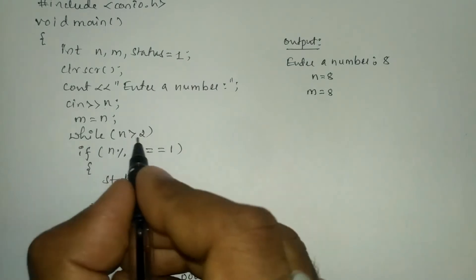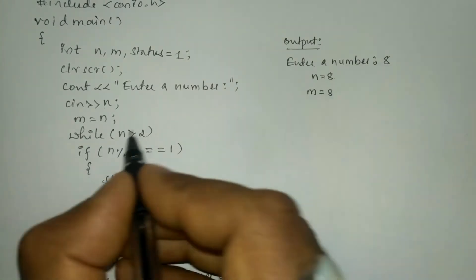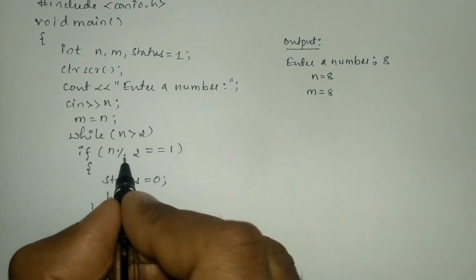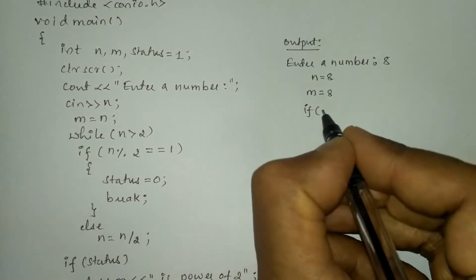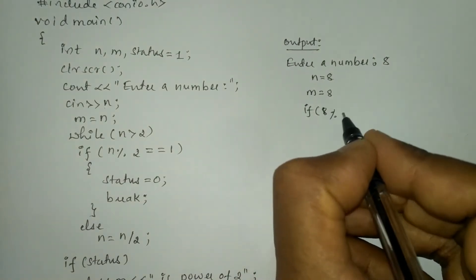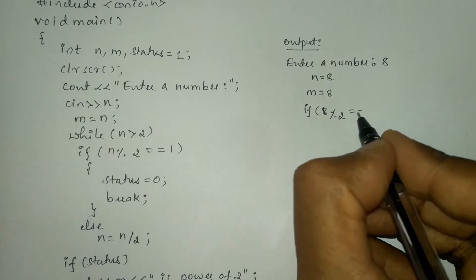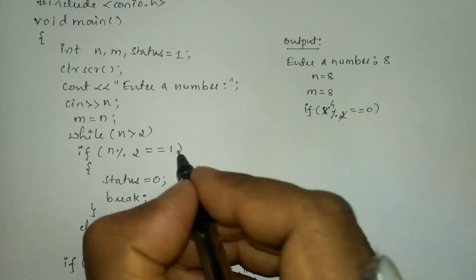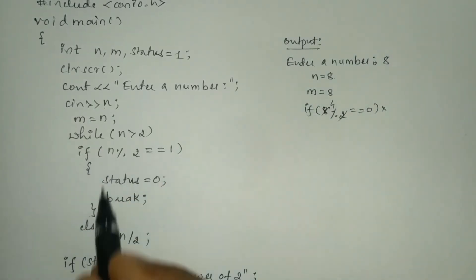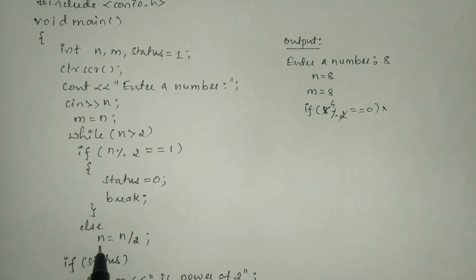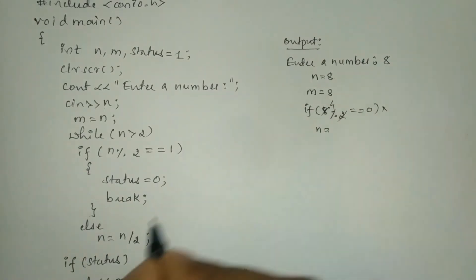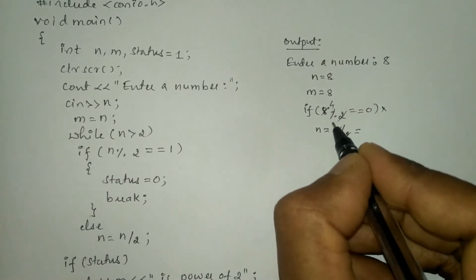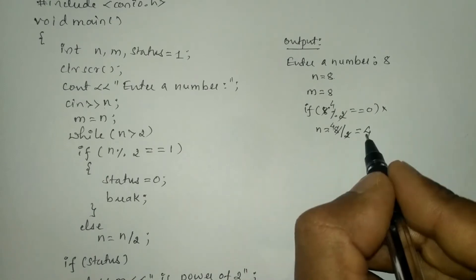Next we check: while n is greater than 2 — 8 is greater than 2, condition is true. We check 8 modulo 2: this gives remainder 0 because 8 is exactly divisible by 2, so this condition is false. Control transfers to the else part: n is equal to 8 integer division by 2, which gives quotient 4. Now n value is 4. Control transfers back to while: 4 is greater than 2, condition is true. We check 4 modulo 2, which gives 0, not equal to 1, so this condition is false again. The else part executes: n is equal to 4 integer division by 2, giving quotient 2. So 2 is stored in n.